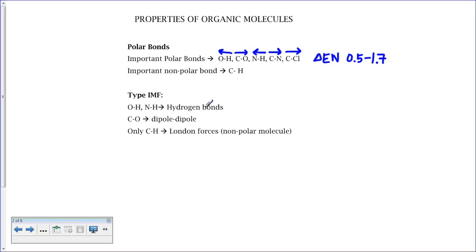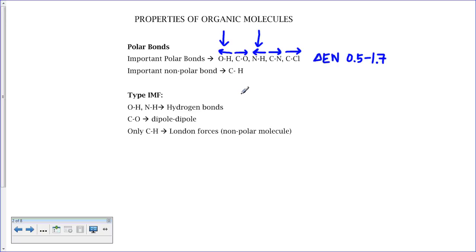What we need to identify is where hydrogen bonds are possible, and where we have non-polar molecules, so what's left over gives us dipole-dipole forces. The two main bonds important for identifying hydrogen bonds are the O-H bond and the N-H bond. The presence of these leads to hydrogen bonds because they have a slightly positive hydrogen and a lone pair on oxygen or nitrogen — exactly what's required to form a hydrogen bond.